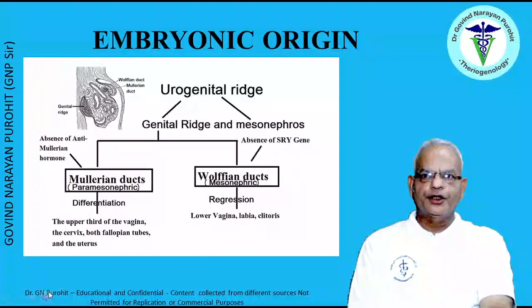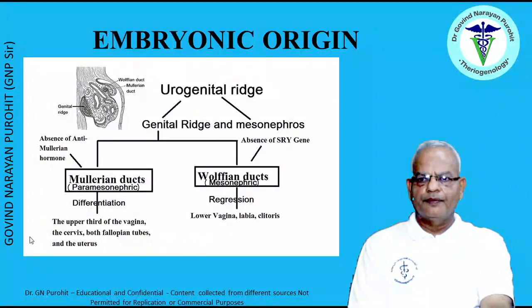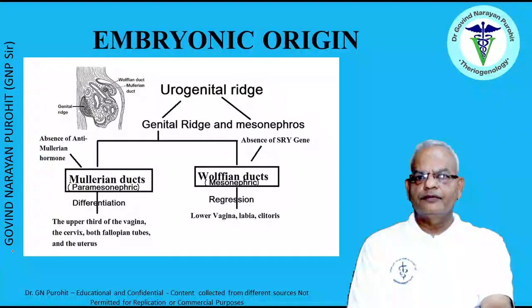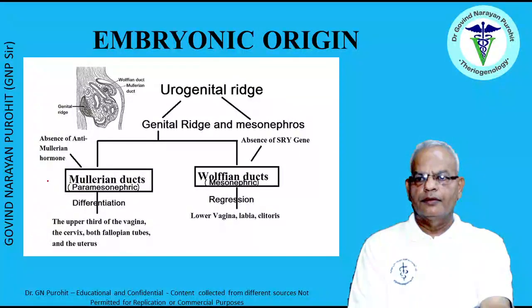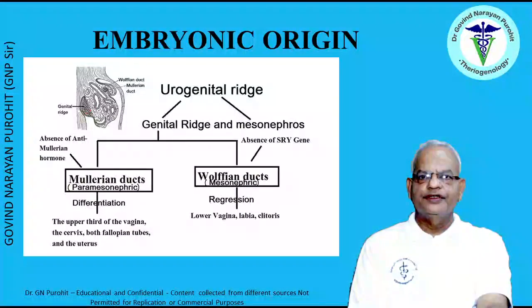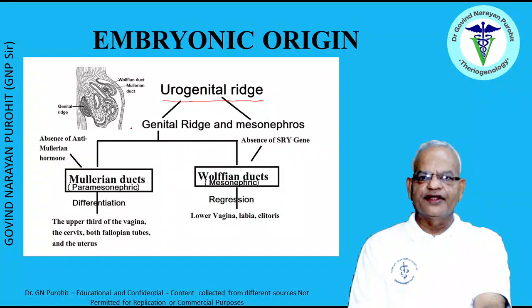Now we talk about the embryonic origin. The gonadal ridge or genital ridge and the mesonephros arise from the urogenital ridge. From the urogenital ridge there appear two mounds: from the genital ridge develop the ovaries, and the genital ridge also forms two ducts — the Wolffian duct and the Müllerian duct.